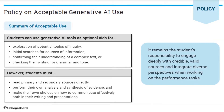The College Board also gives a summary of acceptable use. Students can use generative AI tools as optional aids for exploration of potential topics of inquiry, initial searches for sources of information, confirming their understanding of a complex text, or checking their writing for grammar and tone. However, students must: 1. Read primary and secondary sources directly. 2. Perform their own analysis and synthesis of evidence. 3. Make their own choices on how to communicate effectively both in their writing and presentations.